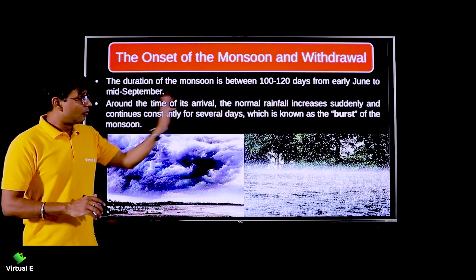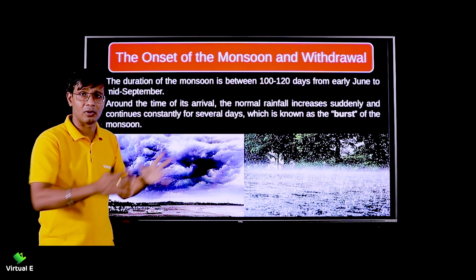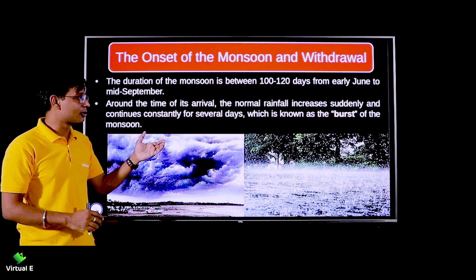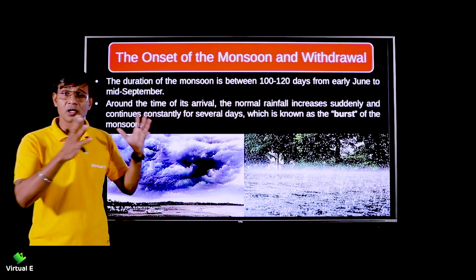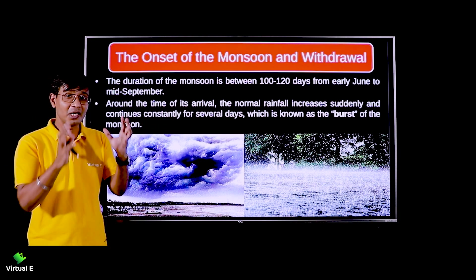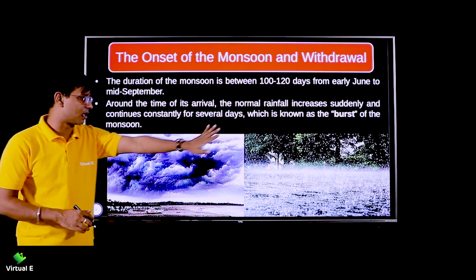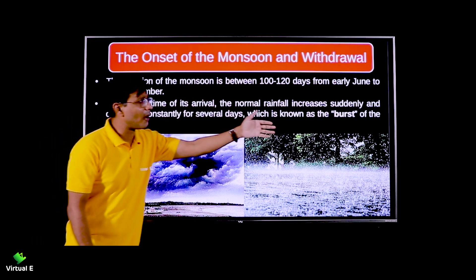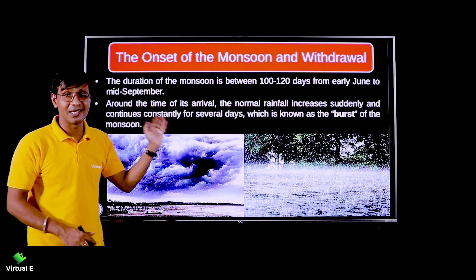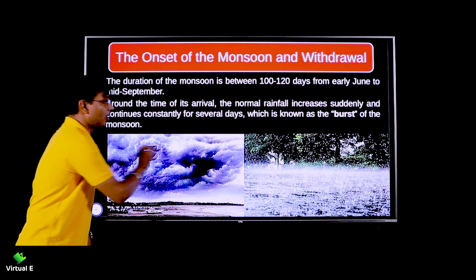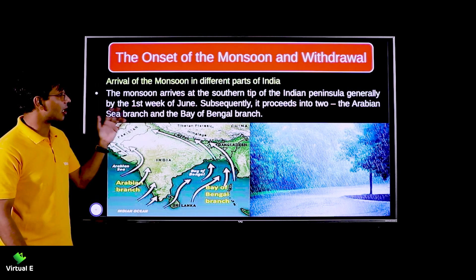When the monsoon comes, it is normally rainfall, but at times there is sudden heavy and continuous rainfall for a long period - this is known as a burst monsoon. Just like a cloud burst in Uttarakhand causes massive damage, the word 'burst' refers to sudden rainfall that continues for a long time. This concept is generally asked for only one mark.